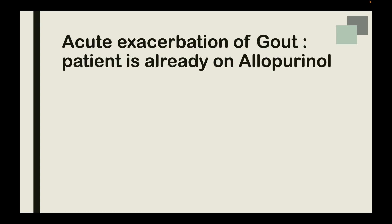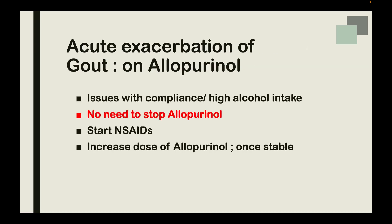Another key topic is how to manage acute exacerbations of gout whilst the patient is on allopurinol. The key is not to stop allopurinol, start NSAIDs, and then increase the dose of allopurinol once the patient is stable. Also, rule out issues around compliance and high alcohol intake, which reduces the efficacy of allopurinol.